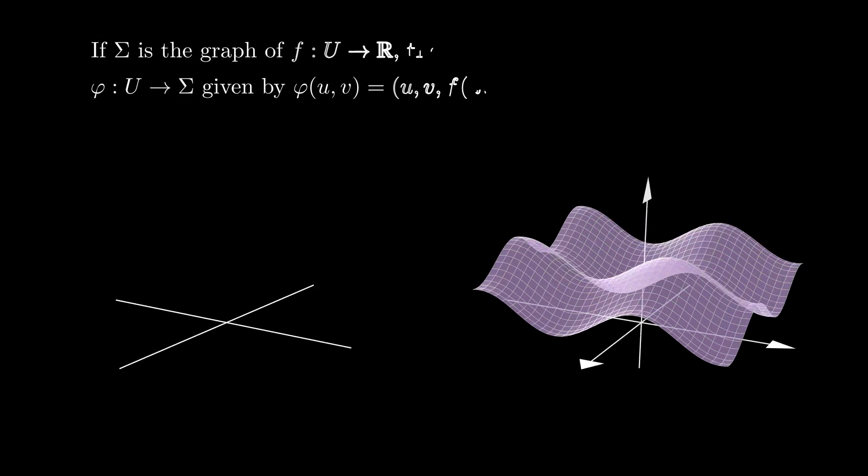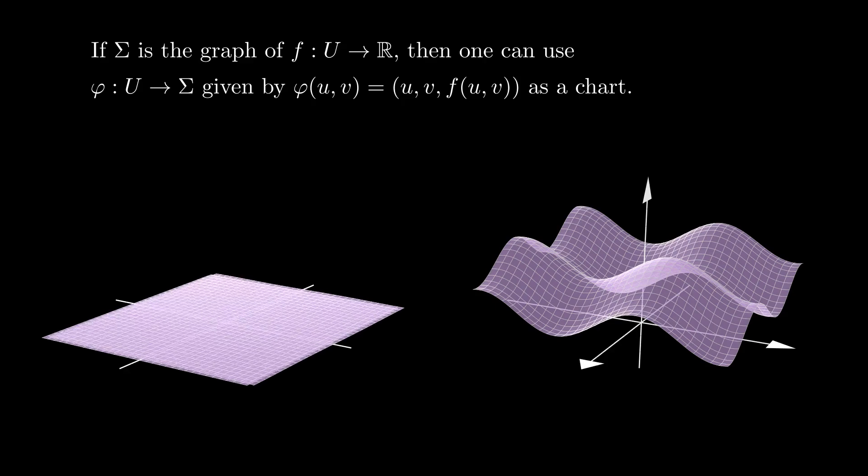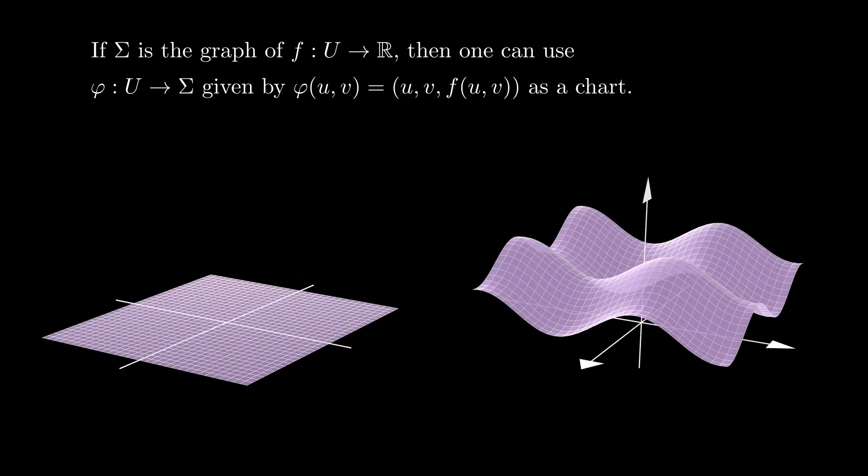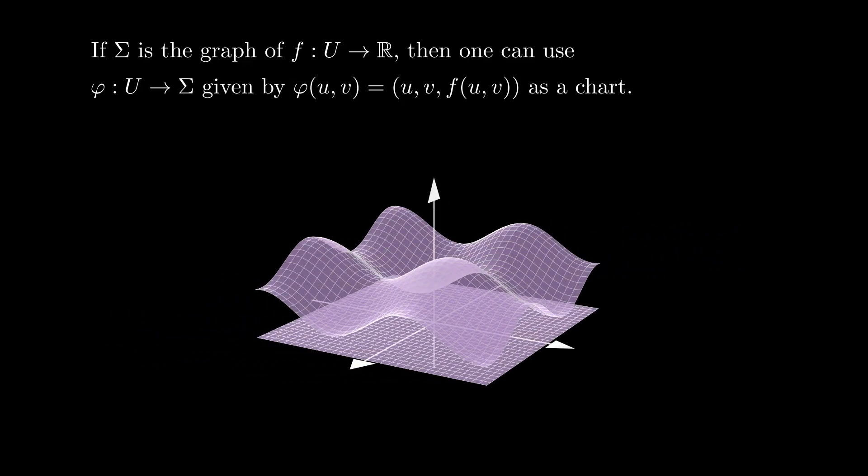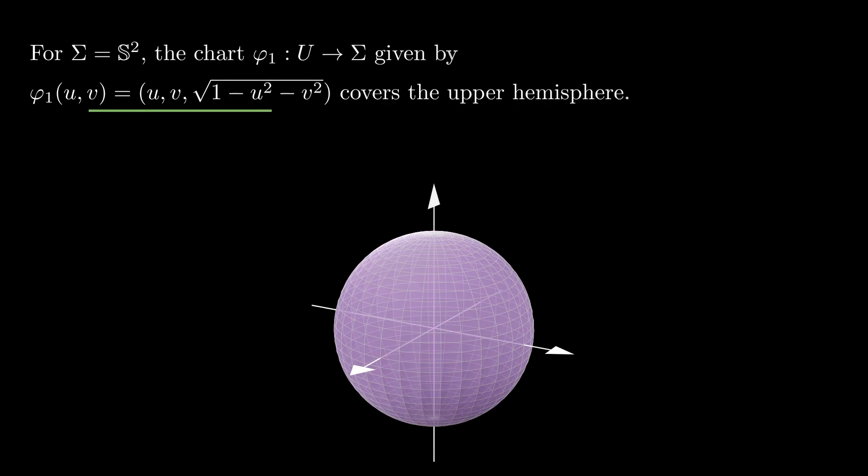If sigma is the graph of a smooth function f of xy with domain u, then one can consider the chart phi from u to R3 given by (u, v, f(u,v)), which covers the entire surface sigma. If we put u under sigma, then what this chart does is simply lifting the domain to the graph.